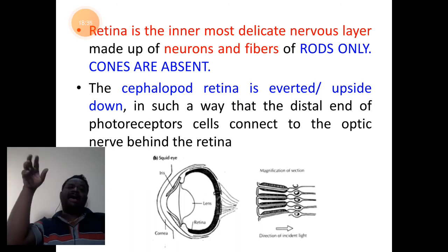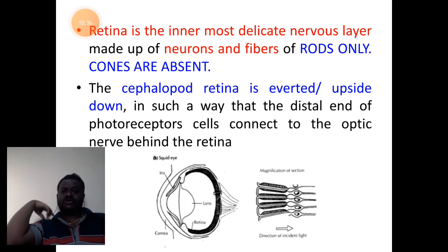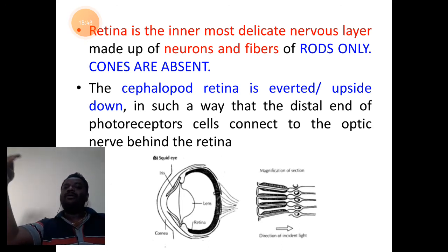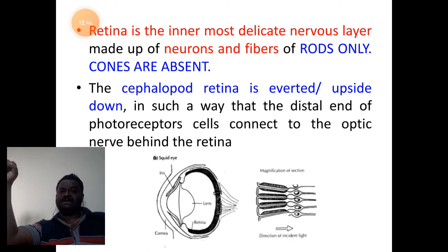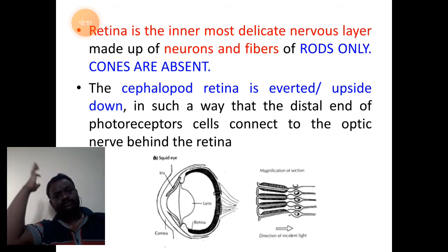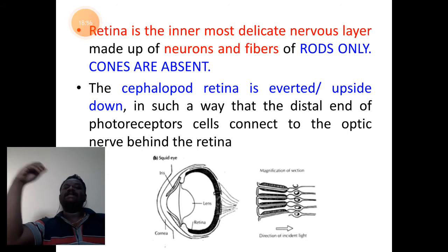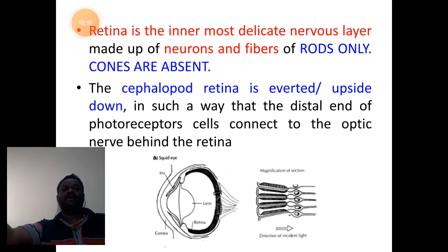The retina has two layers: one is the pigmented layer and the other is the neural layer — the nervous layer of neurons and fibers.